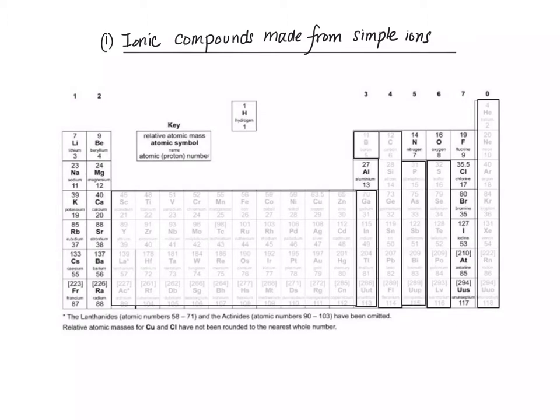So the metals in group 1 all form an ion with a plus 1 charge. All the metals in group 2 form ions with a plus 2 charge. Aluminium forms an ion with a plus 3 charge. Everything in group 7 forms an ion with a minus 1 charge. Oxygen and things in group 6 form an ion with a minus 2 charge. And nitrogen and things in group 5 form an ion with a minus 3 charge.